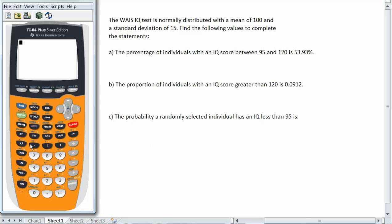So what I want to do is come in here and say second distribution, pick normal CDF. For my lower limit I want to do negative infinity. So below the 3 you'll see the negative sign. That is the negative sign.